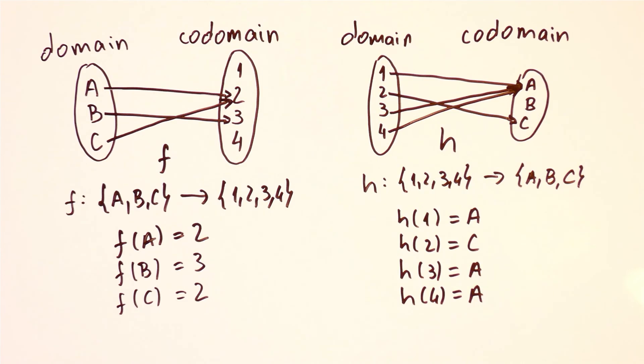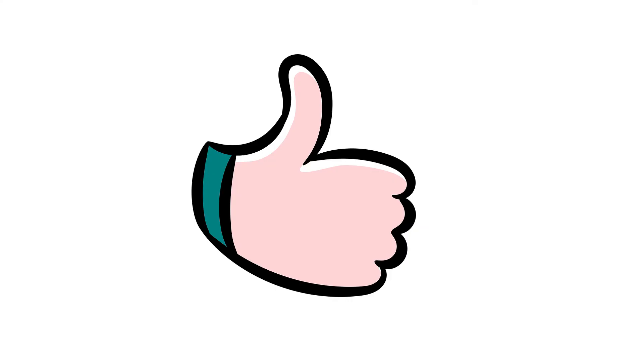So these are just some examples of functions. Their domains and codomains had a relatively small number of elements. But domains and codomains can also have an infinite number of elements, which we'll see in the upcoming videos. That is all for this video. If you liked it, click the like button — it helps with the YouTube algorithm. And I'll see you next time.